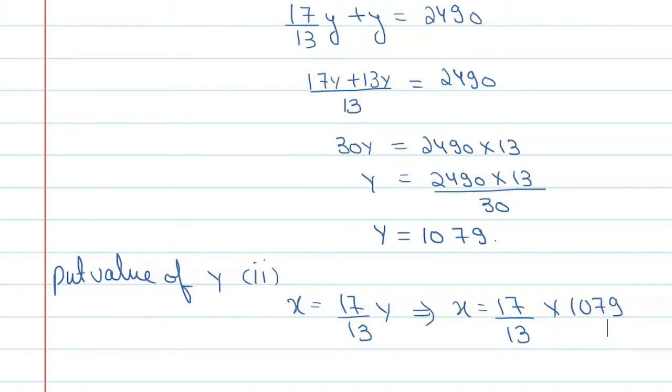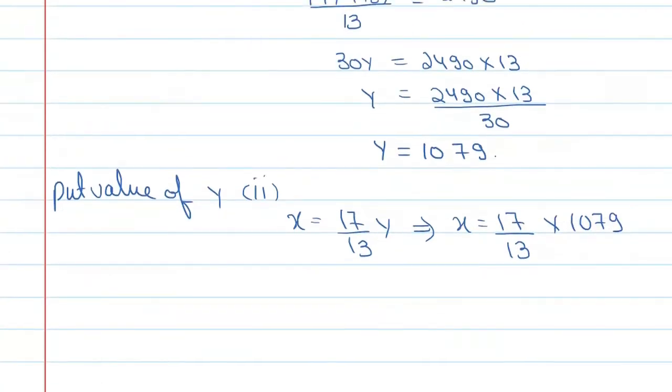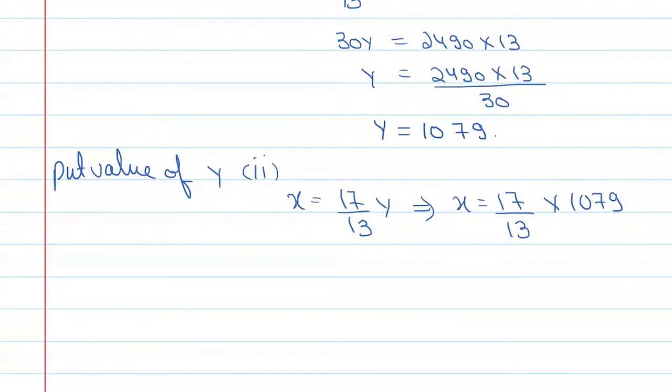So from here the value of x equals 1411. That's the final answer. So the two numbers are 1411 and 1079, and the correct option is C.